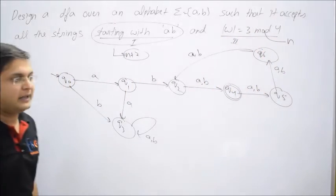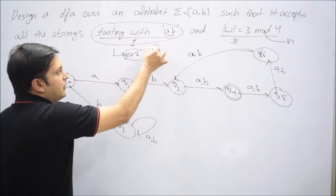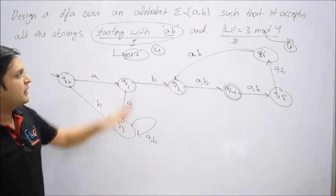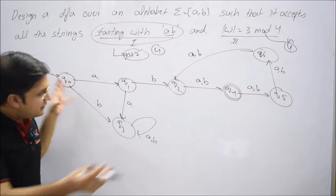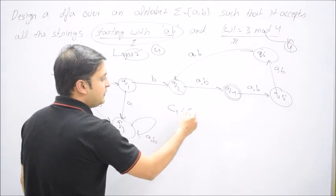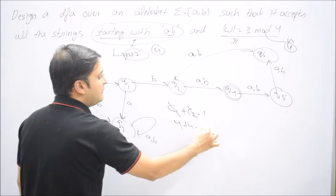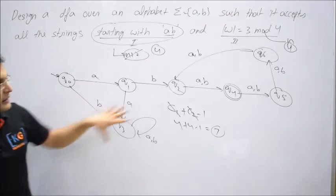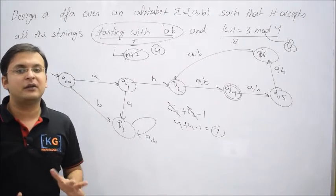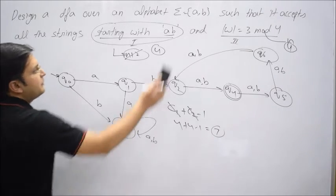Let me tell you a shortcut. For condition one — starting with a string of length n — the number of states is always n plus 1. For condition two — length is remainder mod n — the number of states is directly n. Here, the string 'AB' has length 2, so condition one gives 2 + 2 = 4 states. We divide by 4 for the mod condition, so condition two also gives 4 states. The formula for designing them together is: condition one + condition two minus one.